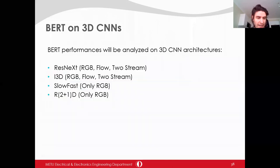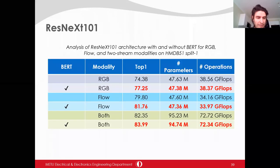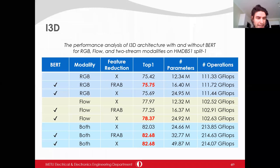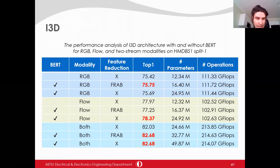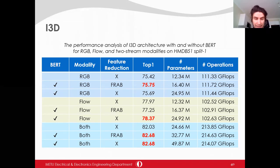Investigating the impact of BERT for different 3D CNN backbones and modalities using split one of HMDB51: for ResNeXt-101 backbone, BERT with FRMB increases performance in all modalities with better parameter and computational efficiency thanks to FRMB. For I3D, BERT again increases performance for all modalities. However, the improvements are less compared to ResNeXt-101 backbone. FRMB is important to reduce the number of parameters of the BERT implementation.